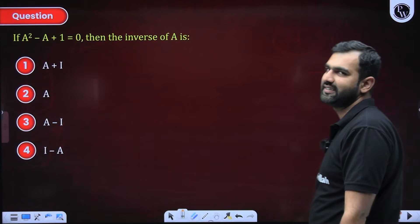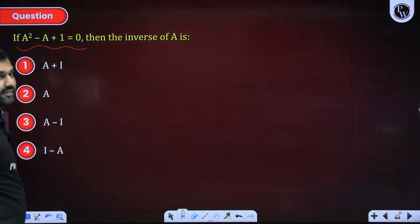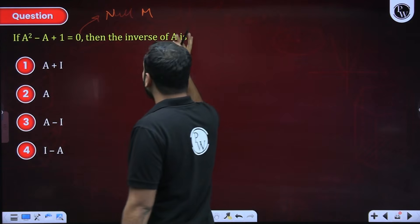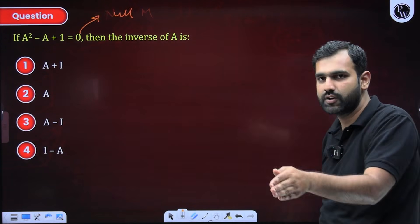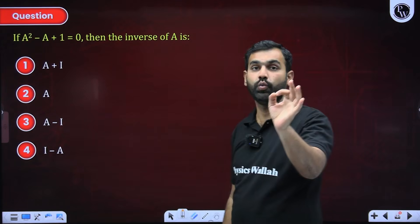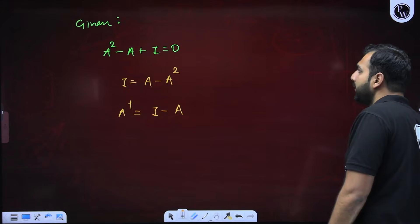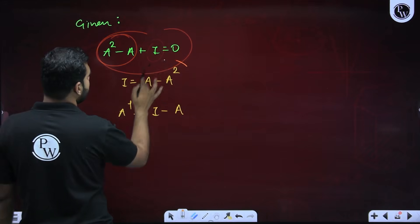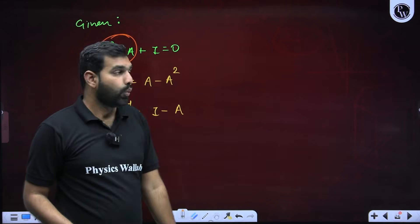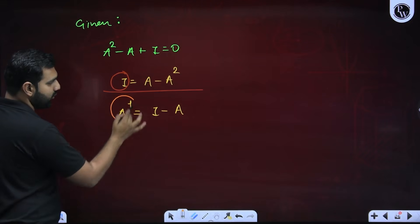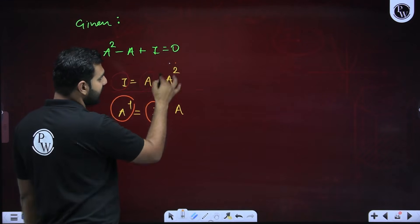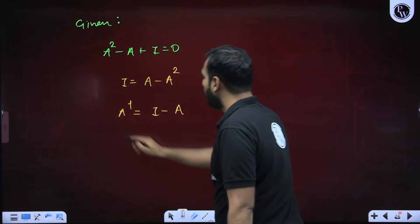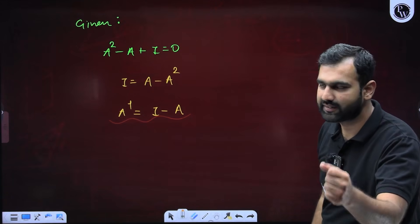Moving ahead with this classic question: A² - A + I = O (the null matrix — not the scalar 0). This is based on the characteristic equation or Cayley-Hamilton method. Rearranging: I = A - A². Multiplying both sides by A inverse: A⁻¹·I = A⁻¹·A - A⁻¹·A² gives A⁻¹ = I - A. So from the matrix polynomial or characteristic equation, we find that A inverse is the identity matrix minus A.